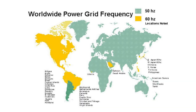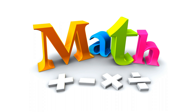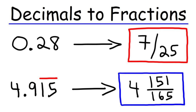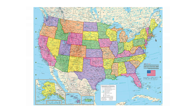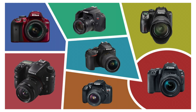Number three: you can also change the frames per second that you're shooting at. In order to do this, the country frequency needs to be able to be multiplied or divided by whole numbers — numbers without decimals or fractions, like 1, 2, 3, 4, 5 and so on. Let's take the United States as an example. If you're in the US, you need to set your camera to shoot at 60 frames per second because the AC frequency is 60 Hertz. Many entry-level cameras can't shoot this fast, especially when shooting in 4K.